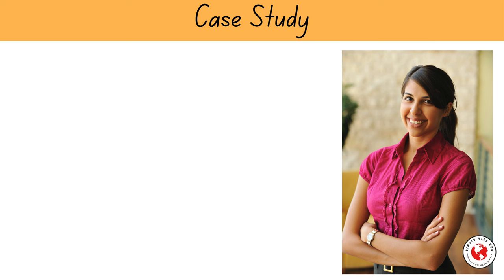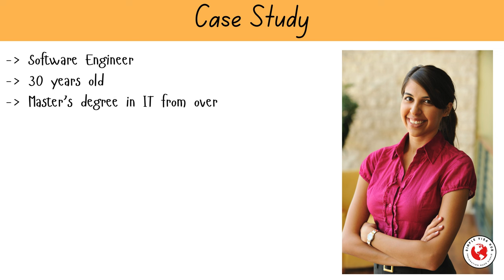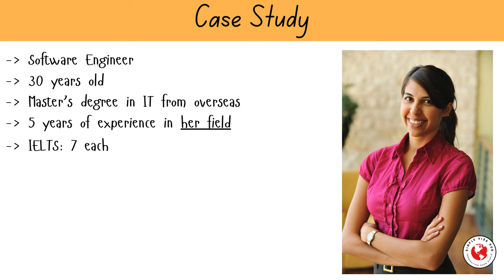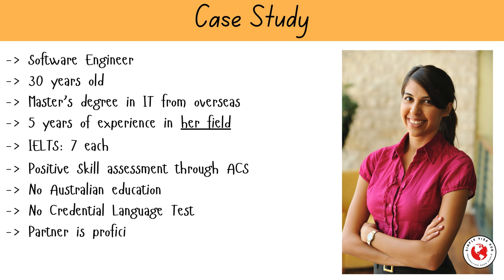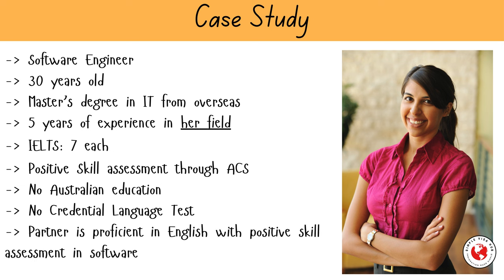Now let's dive into a case study on how points are calculated for these General Skilled Migration Visas in Australia. Meet Simran. Simran is a software engineer from India. She is 30 years old, has a master's degree in IT, and has been working in her field for the past 5 years. Simran took the IELTS test and scored 7 in each band. She did her skills assessment through ACS and got a positive result. She has not studied in Australia and has not completed any credential language test. She has a partner who has proficient English and a positive skills assessment in software testing. So how many points does Simran have if she is submitting an expression of interest for subclass 189, 190, and 491?